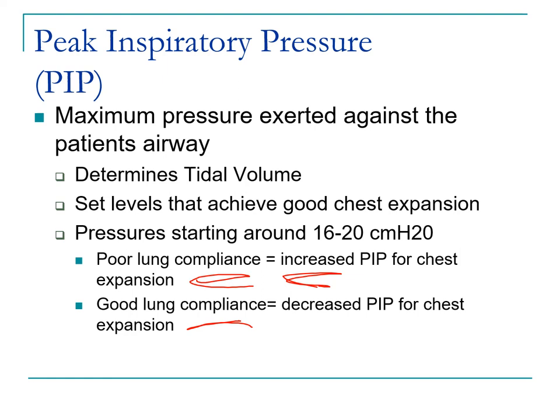Good lung compliance, closer to term, means you don't need nearly as much PIP. After giving surfactant replacement therapy, do you still need that same 28 over 5? You need to titrate after the intervention. If you leave them on that same high pressure after compliance improves, you could cause ventilator-induced lung injury and barotrauma. If the kid is in volume ventilation, you don't need to worry about changing tidal volumes — you're giving a lung-protective 6 mL/kg target. But in pressure-targeted ventilation, you must take action after interventions to avoid lung injury.